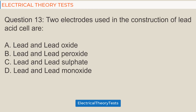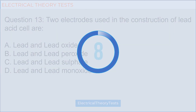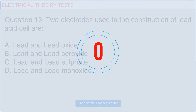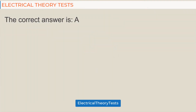Question 13: The electrodes used in the construction of a lead acid cell are — a) lead and lead oxide, b) lead and lead peroxide, c) lead and lead sulfate, d) lead and lead monoxide. The correct answer is a) lead and lead oxide.